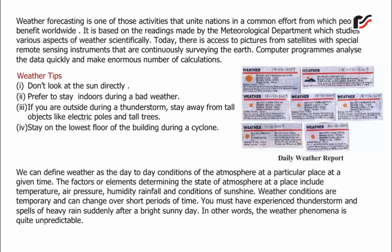We can define weather as the day-to-day conditions of the atmosphere at a particular place at a given time. The factors or elements determining the state of the atmosphere at a place include temperature, air pressure, humidity, rainfall, and conditions of sunshine. Weather conditions are temporary and can change over short periods of time. You must have experienced thunderstorms and spells of heavy rain suddenly after a bright sunny day. In other words, the weather phenomenon is quite unpredictable.